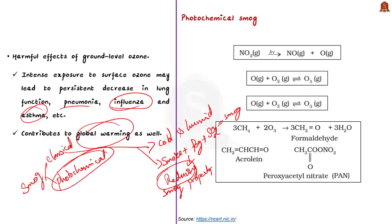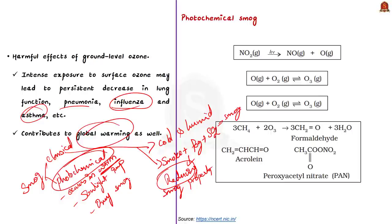Photochemical smog occurs in warm, dry and sunny climate, in contrast to classical smog. The mixture has oxidizing properties — that is why photochemical smog is also called oxidizing smog. The ozone in photochemical smog is rich in oxygen, and anything rich in oxygen can act as an oxidizing agent, which is exactly why photochemical smog is called an oxidizing smog.